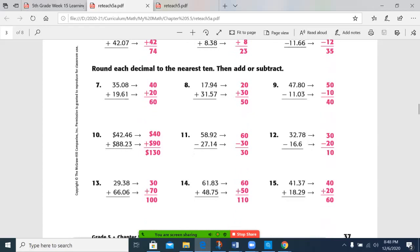On the bottom part, we rounded to the nearest ten, which is the second digit over. So we have 20 plus 30 is 50, 50 minus 10 is 40, 40 plus 90 is 130, 60 minus 30 is 30, 30 minus 20 is 10, 30 plus 70 is 100, 60 plus 50 is 110, 40 plus 20 is 60.